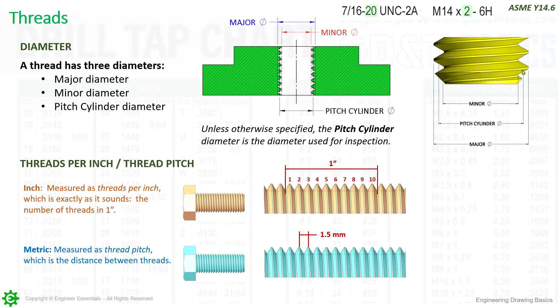Threads per inch and thread pitch — when we're dealing with inch threads, the threads per inch is the number of threads over a one-inch length. When we get into metric threads, that is the pitch itself, which is the distance from thread to thread. Both are very easy to measure with a pocket scale. If you pick up a bolt and think it's an inch thread, put your scale at the crest of one thread and measure over one inch, counting the threads. For metric threads, it's just the distance from one thread to the next.